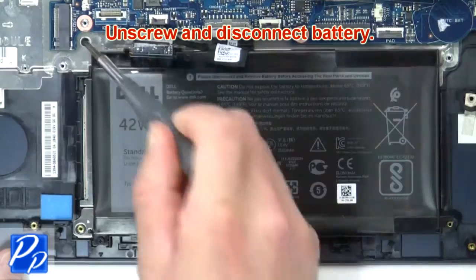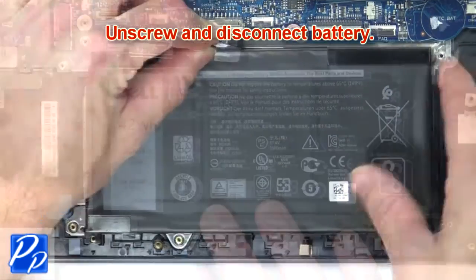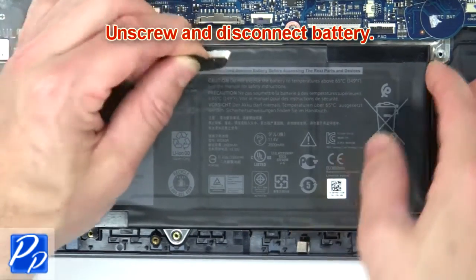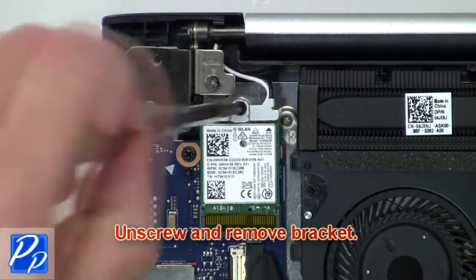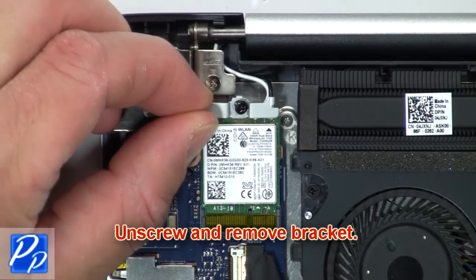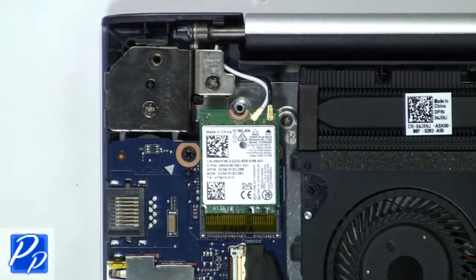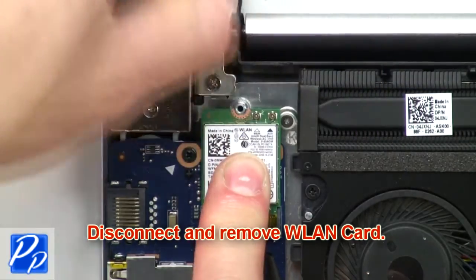Unscrew and disconnect battery. Next unscrew and remove bracket. Then disconnect and remove wireless card.